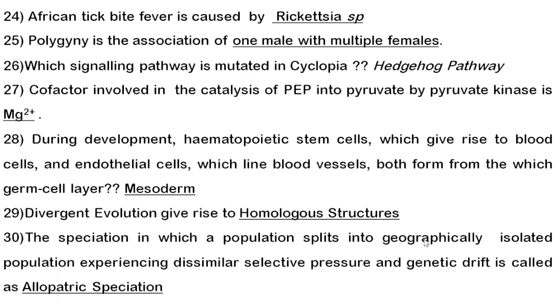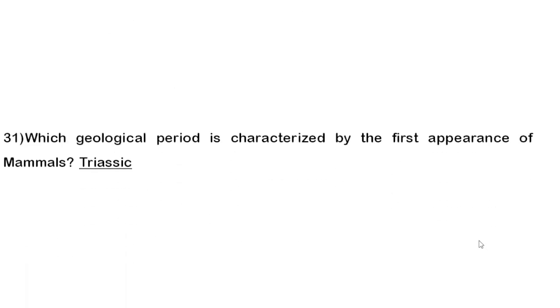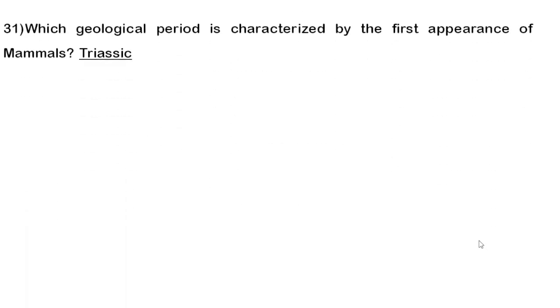Thirtieth question: the speciation in which a population splits into two geographically isolated populations experiencing similar selective pressure and genetic drift is called allopatric speciation. If you find the phrase 'geographically isolated,' remember the answer is allopatric speciation.